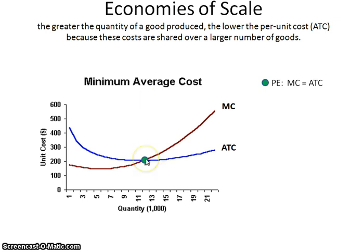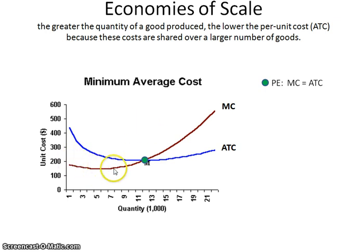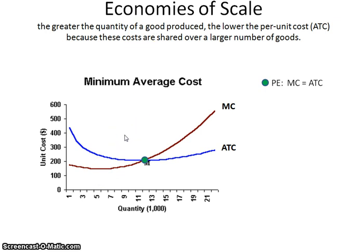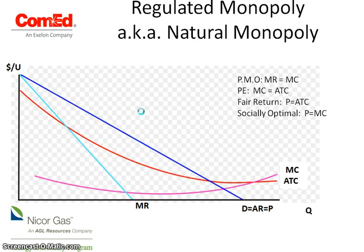We can see that minimum ATC is at a quantity here of $12,000. If it was perfectly competitive, minimum ATC would be way over here. What you have is an ATC curve that is very slow to drop to the minimum point, and a marginal cost curve where that U-shaped part is very long — pulled out longer in length instead of being a short, swooping type of curve. That's what you're going to see in these graphs. The reason natural monopolies exist is economies of scale, where it takes a long time to get to minimum ATC.